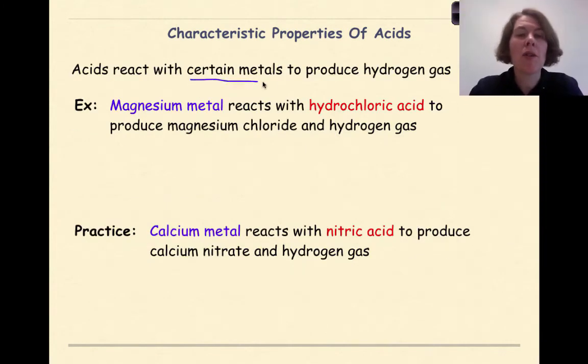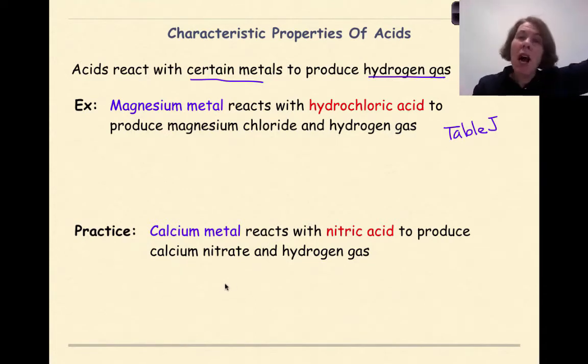Acids react with certain metals to produce hydrogen gas. Now this is totally based on table J of your reference table. So when we write out these examples right here, you're going to say, wow that looks really familiar. And you're right, it's all about single replacement reactions, where when you look at table J, a metal that is high on table J can replace any metal below it. Specifically though, we're going to be looking at replacing our standard on table J, which is hydrogen.